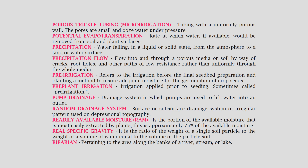Readily available moisture (RAM): the portion of the available moisture that is most easily extracted by plants; this is approximately 75 percent of the available moisture. Real specific gravity: the ratio of the weight of a single soil particle to the weight of a volume of water equal to the volume of the particle soil.